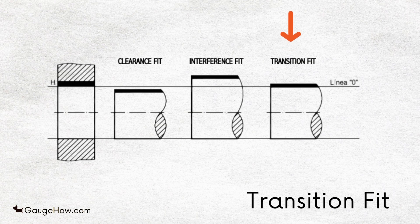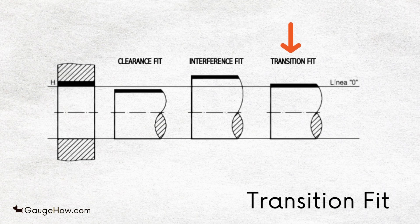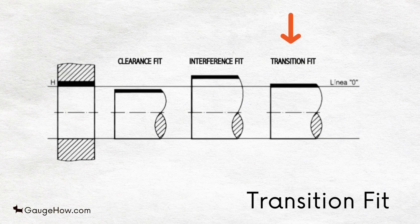This is achieved by keeping the upper limit of the shaft larger than the lower limit of the hole and the lower limit of the shaft smaller than the upper limit of the hole.